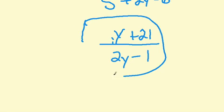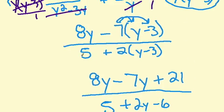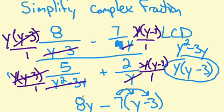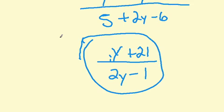Go ahead and circle that for us there. And that is our final answer. I'll go up and show you the original. We went from this, followed all those steps, and we got to our final simplified answer: y plus 21 all over 2y minus 1.